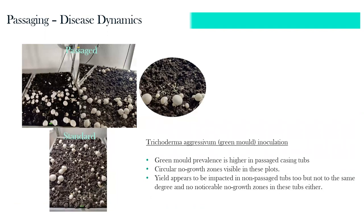We also looked at Trichoderma, a green mold — a fungal pathogen within the crop — and we see adverse effects. In the passage material there's actually more green mold, so there's no positive commercial result there. There's a ring effect where there's complete inhibition of growth around the inoculation point; the Trichoderma creates zones of inhibition. In the standard material, green mold is still present because it's inoculated in, but it's not as prevalent and you don't get the zone where green mold completely takes over.